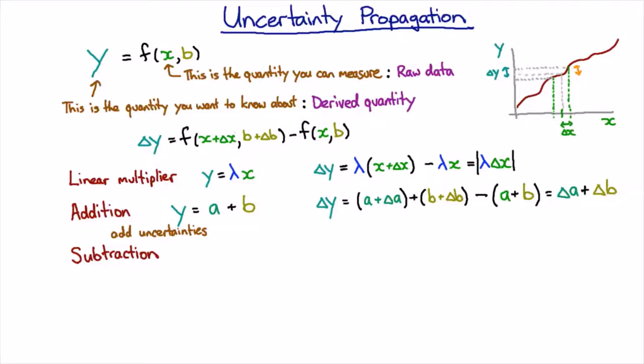And then it doesn't matter whether we pick plus or minus there, and it shouldn't. In the end what we're going to get is the sum of the uncertainties popping out. And so in fact addition or subtraction, in both cases you add the uncertainties.